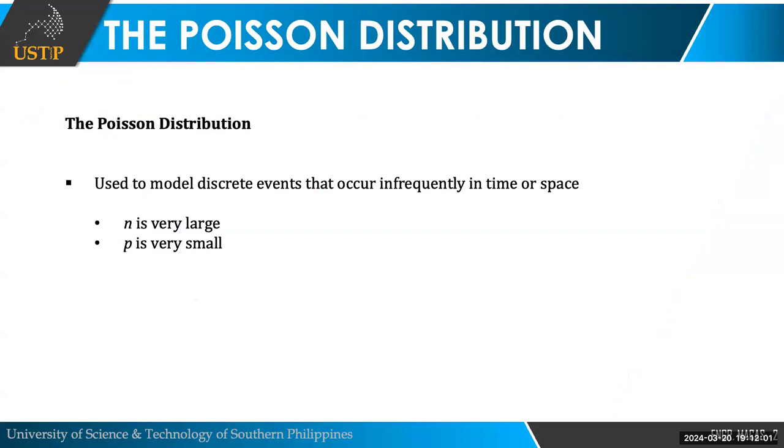They have common assumptions with binomial distribution. If you can remember our binomial distribution, it's used to model discrete events in time. And there are n number of trials. We want to get the probability of success with x number of times in total number of trials. In Poisson distribution, it's discrete in time, but they are used in different contexts. For Poisson distribution, you are observing a certain event in an interval. And this event happens infrequently.